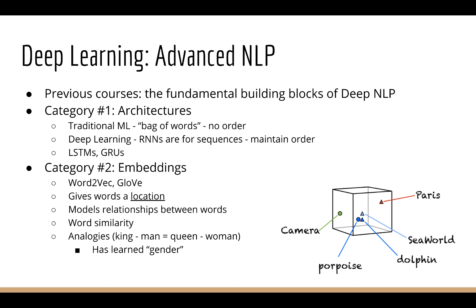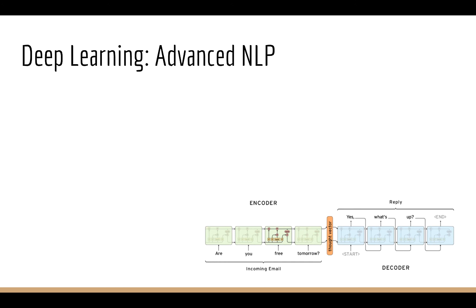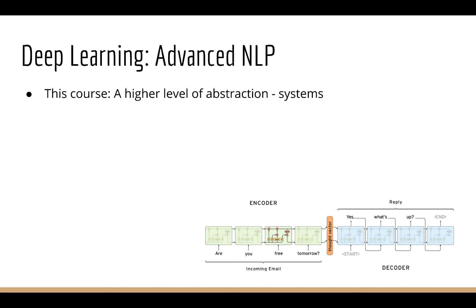The previous courses were all about how to build these things and how they work. If you aren't familiar, there's no need to worry since we'll be reviewing all these concepts at the beginning of this course. This course takes you to a higher level of abstraction. Since you know how these things work, it's now time to build systems of these things. How can we make use of word embeddings and RNNs for practical applications?